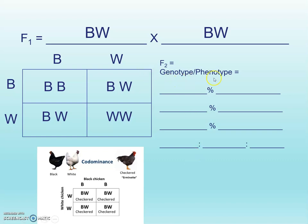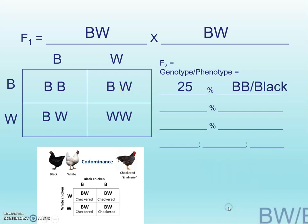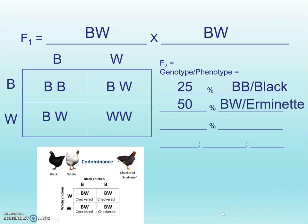Now our genotypes and phenotypes are going to be the same, so I'm just going to save some space. One box is big B, big B — so there's 25% BB for a genotype, and that also means 25% are going to be black. Box two and box three are BW, they're heterozygous, and they're also going to be erminette — checkered or speckled. And then box four, the two capital Ws, will be 25% white. Our ratio for both genotype and phenotype is 1:2:1.